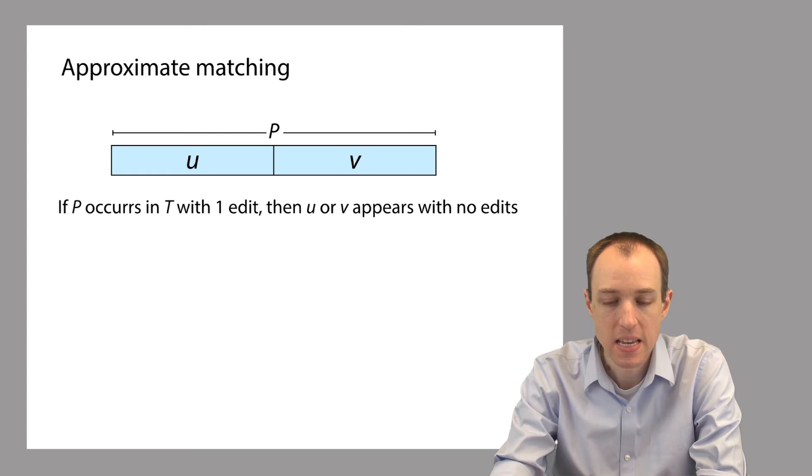So the idea is this: if P occurs in a text T with one difference, with one edit for example, then either u or v must appear exactly, without any edits.